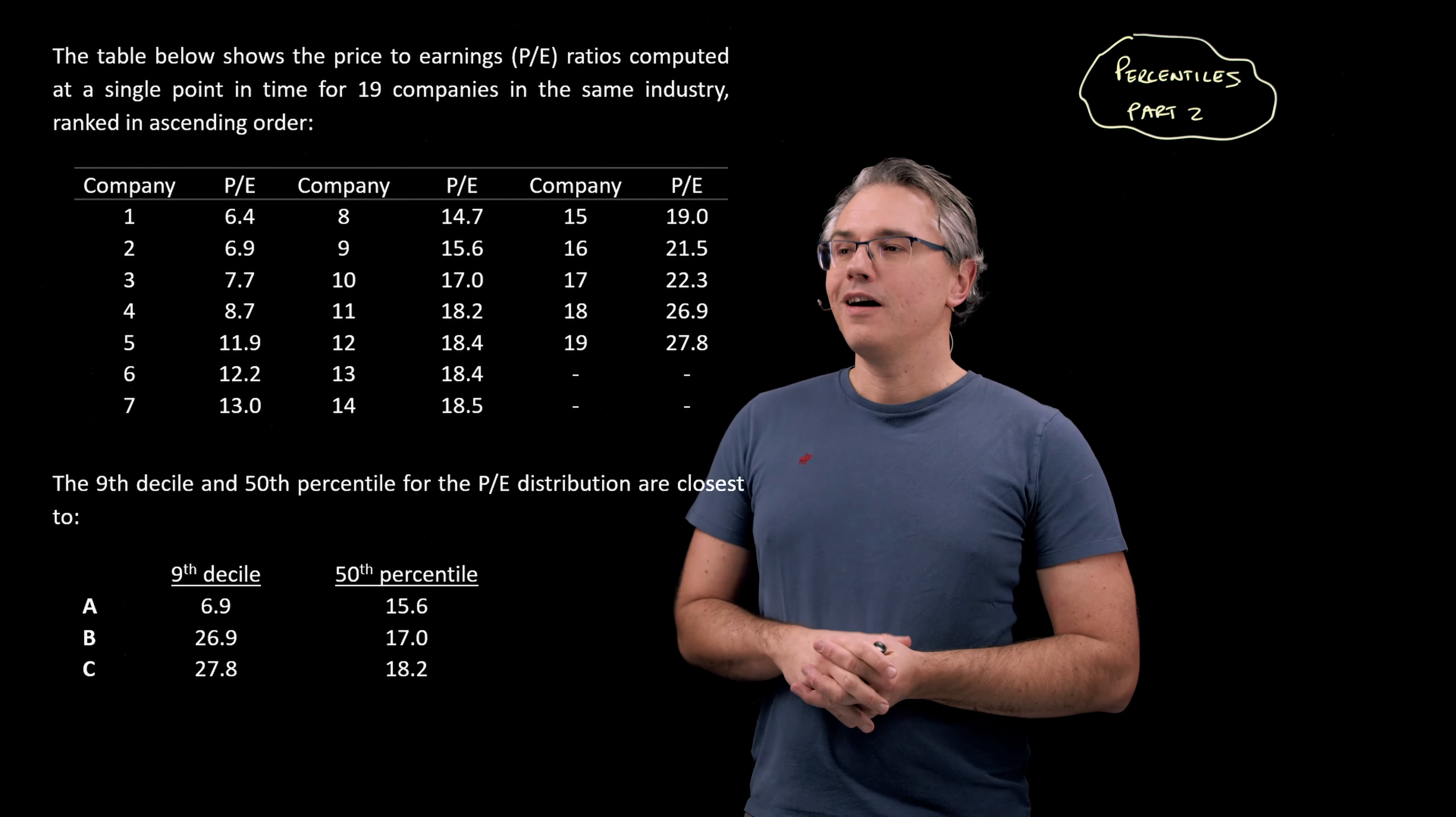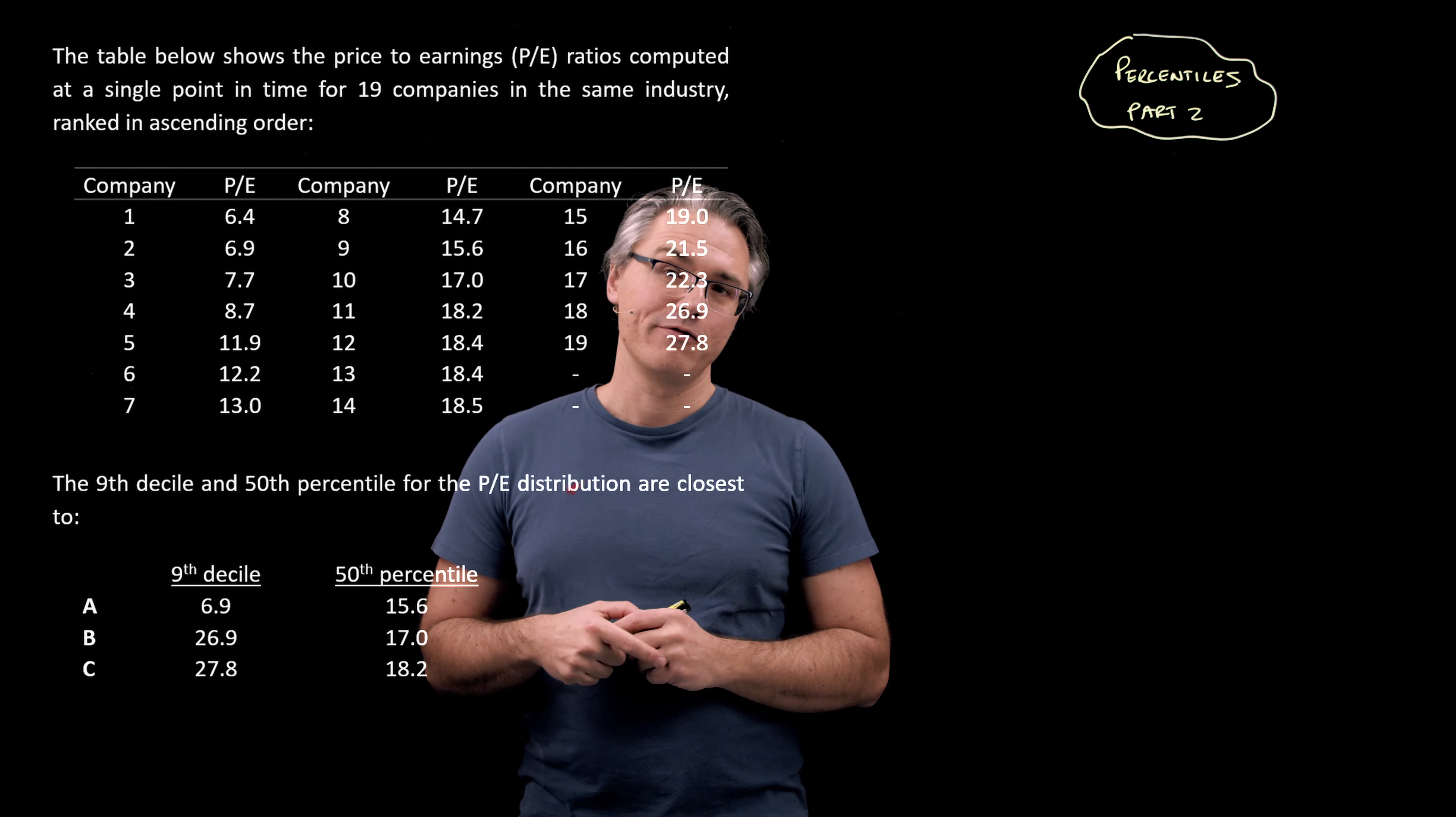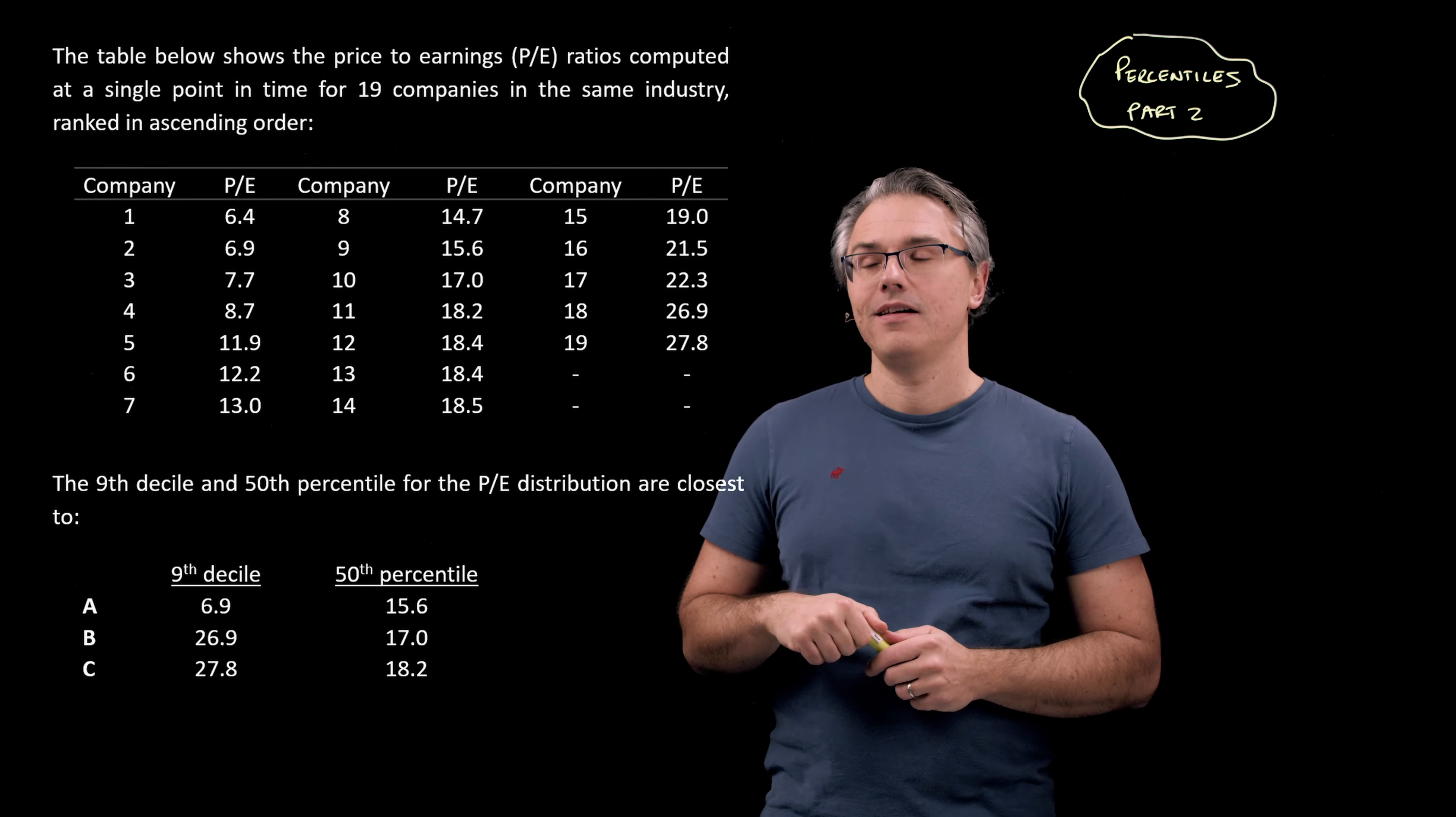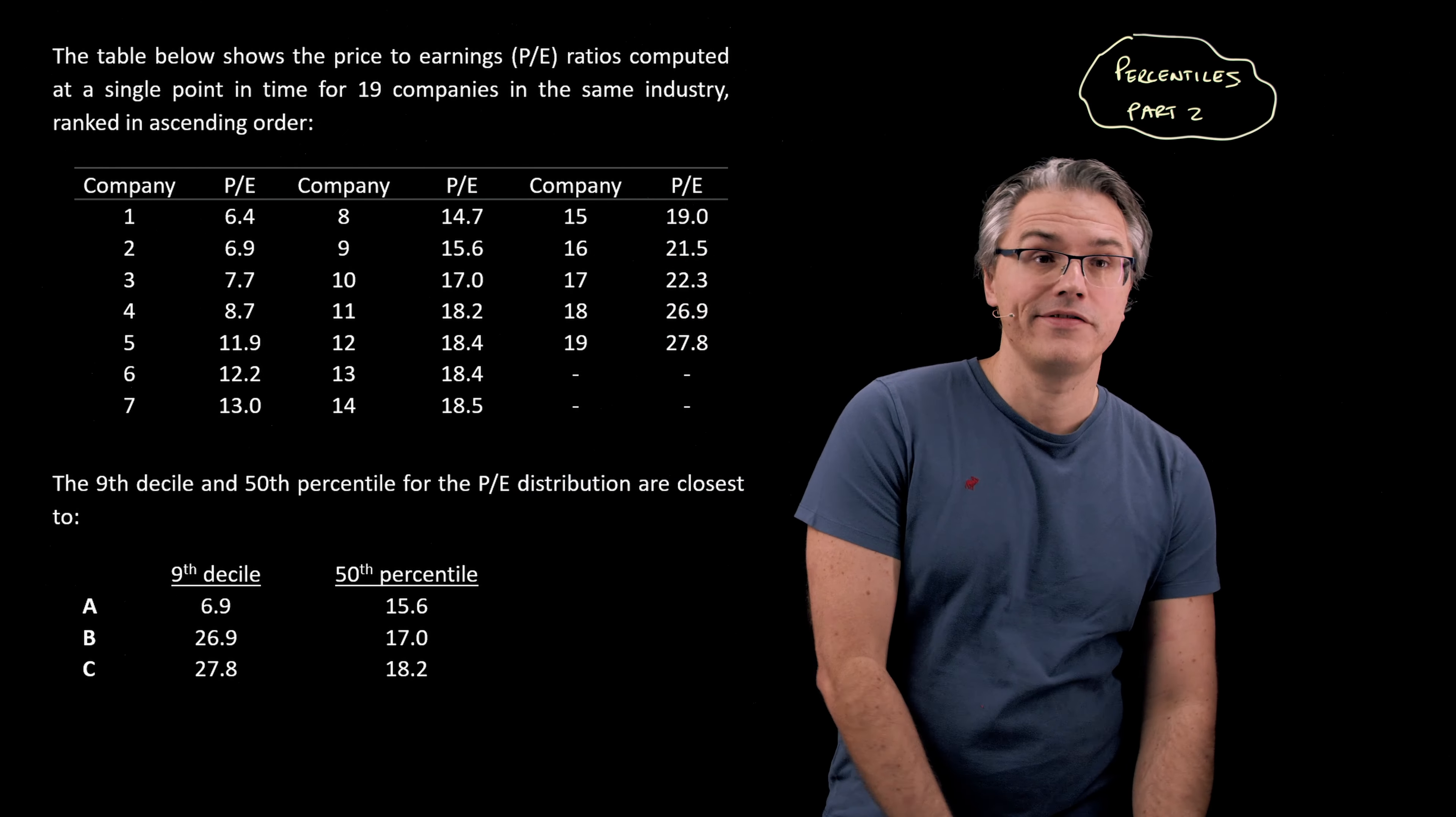We're asked for the ninth decile and 50th percentile for this distribution. What are they closest to? Well, given what we've already said in the previous video, you should remember that deciles divide the data set or the distribution here, the population into tenths. We've got the 50th percentile as well. Percentiles divide the distribution into halves.